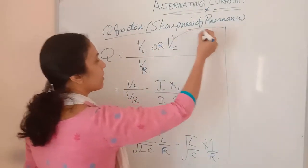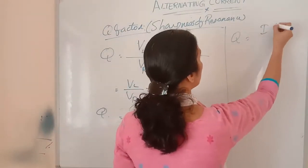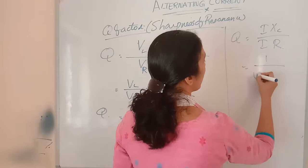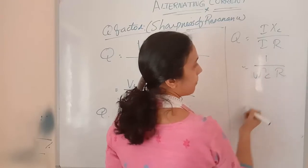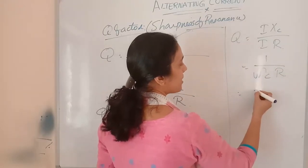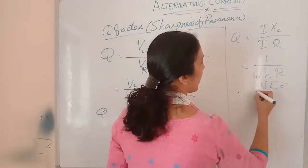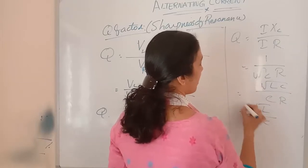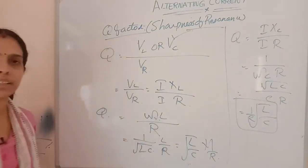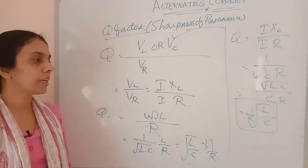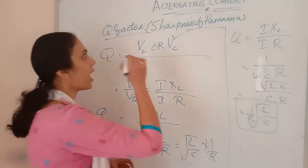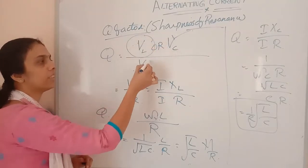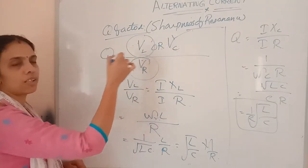If we consider VC instead, we get I×XC divided by I×R, which equals 1/(ω_R×C×R). Substituting ω_R equals 1/√(LC), we get √(LC)/(C×R), which simplifies to (1/R)×√(L/C). Therefore the Q factor, whether derived from the inductor or capacitor voltage, equals (1/R)×√(L/C). At resonance, Q factor is the ratio of voltage across the inductor or capacitor to the voltage across the resistor.